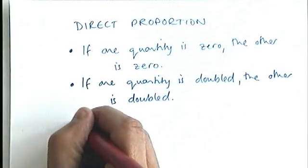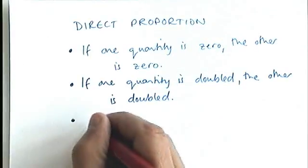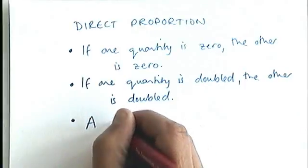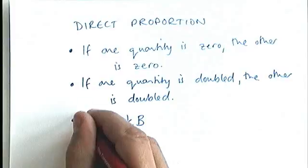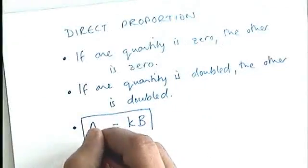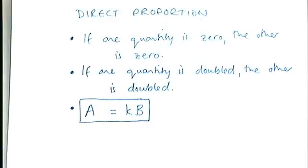And the third, and this is really the key thing, is that when you've got direct proportion, the two variables, the two things that are going to change, are always related by a formula in this format. And I always put it in a box to make it stand out. It's key. That is the key point behind direct proportion. One quantity is equal to k, a constant, multiplied by the second quantity. That is always the case in direct proportion.